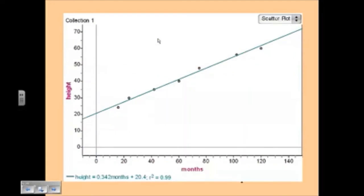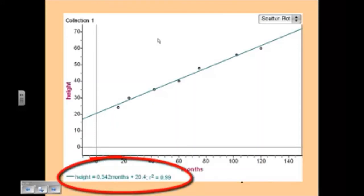Here is, using Fathom, which is a program we have in our computer lab, here's what the scatter plot looks like, and then here is the least squares regression line. And you can see that it puts it into words for us. So the height, the predicted height, equals 0.342 times the months plus 20.4. So the 0.342 is your slope, and the 20.4 is your y-intercept. And Fathom gives you the r-squared value, it does not give you the r-value. So on Fathom you would have to actually use your calculator to do 0.99 and take the square root. On your calculator it should have given you the square root, which was 0.994.